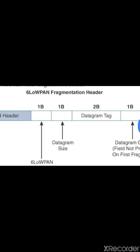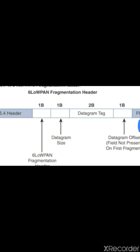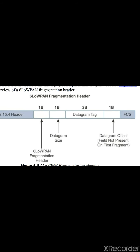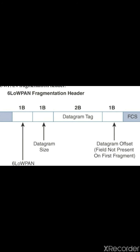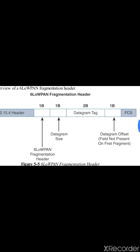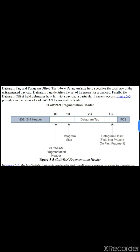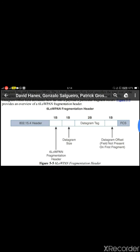As shown in the figure, the first fragment header is: 1 byte (fragmentation header) + 1 byte (datagram size) + 2 bytes (datagram tag) = 4 bytes total. For remaining subsequent fragments, the header will be 5 bytes, because the datagram offset field of 1 byte is included, giving 4 + 1 = 5 bytes (1 + 1 + 2 + 1). This is the concept of the 6LoWPAN fragmentation header.